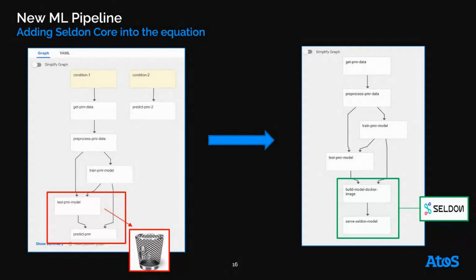As we kept moving forward on this project, we came to realize it was nonsensical to persist the trained model into MongoDB and pull it every time we needed to make a prediction. This is why we opted for Seldon Core to create a microservice for every model we create, reachable via REST commands. That means there is no longer a prediction component inside the ML pipeline, but instead a build and a serve component to create the model server, which runs on Kubernetes but is not associated with Kubeflow.